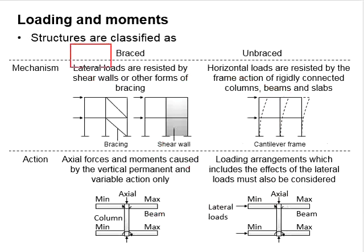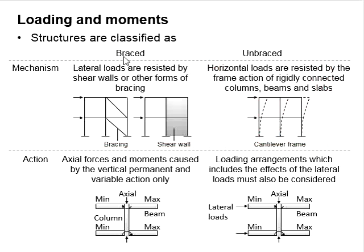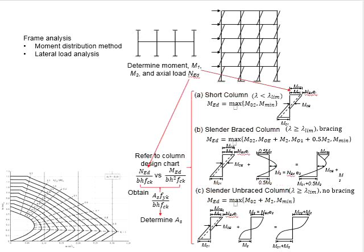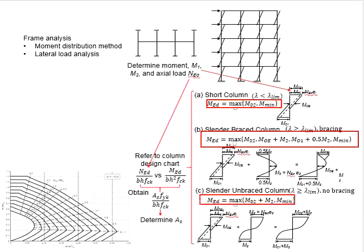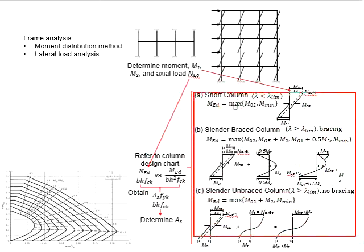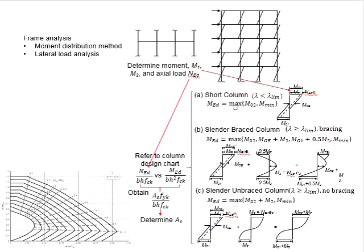The descriptions for braced and unbraced structures have already been discussed in our previous video. Classifying the column as short, slender braced, or slender unbraced is important because the formulas used to determine the ultimate moments acting on the columns are different in each case. This will be discussed in detail in the following videos. Once you have obtained the design moment Med of the columns, you will substitute the value into the formula.